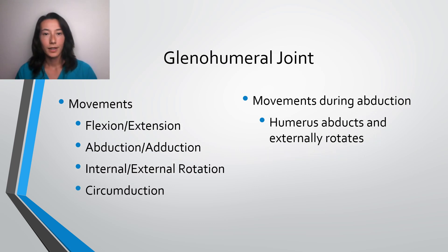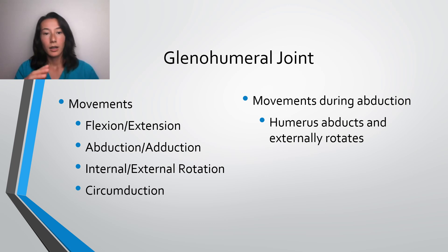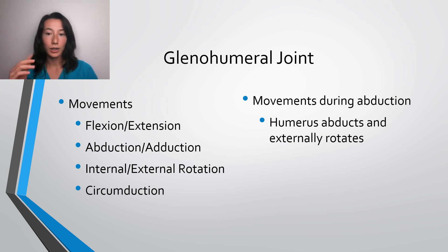The glenohumeral joint. Movements that occur include flexion, extension, abduction, adduction, internal and external rotation, along with circumduction. Movements that can also occur include humerus abduction and external rotation.